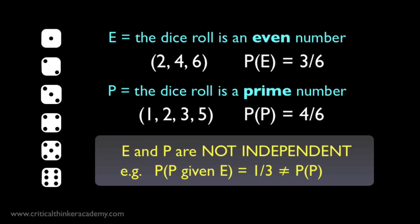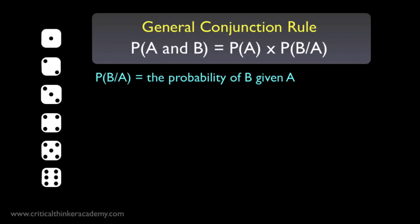This gives us an idea for how we might modify the conjunction rule to fix this problem. Instead of just multiplying the probabilities of A and B, we can try multiplying the probability of A with the probability not of B, but of B given A. An expression like this — the probability of B given A — is called a conditional probability. We've got a whole other video on conditional probabilities, but for now it's enough to just read it as the probability of B given A. Let's try out this new rule with our example.